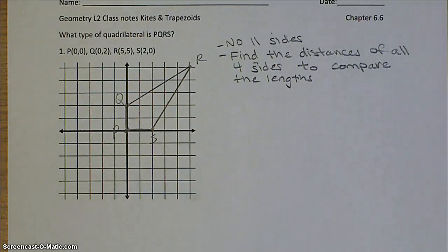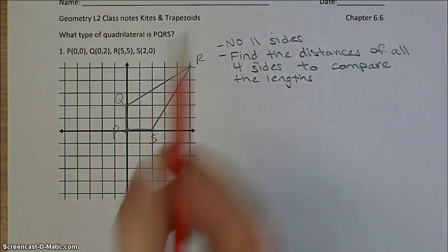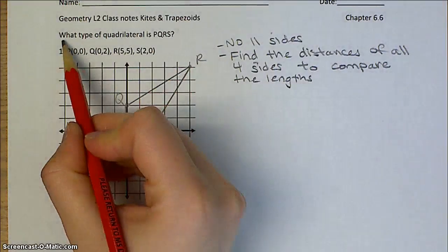Hey, this video goes along with kites and trapezoids, but now we're on the coordinate plane. So if I give you four coordinates, you should be able to tell me what type of quadrilateral it makes. And we've learned a lot of them so far.